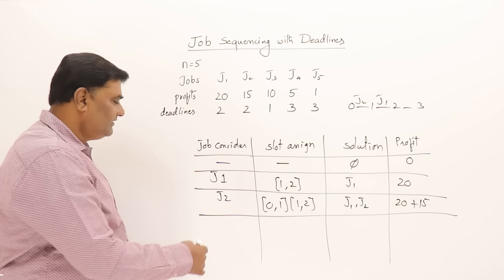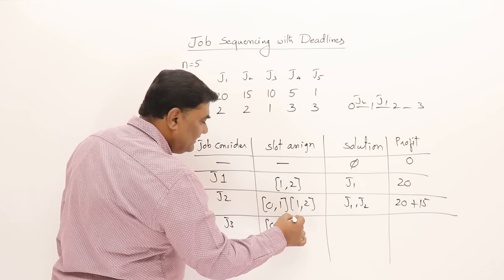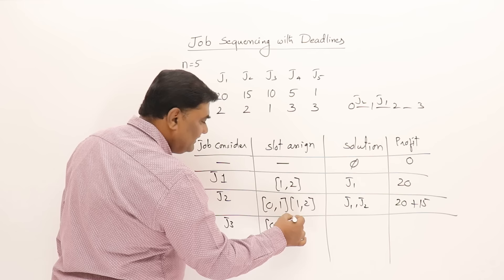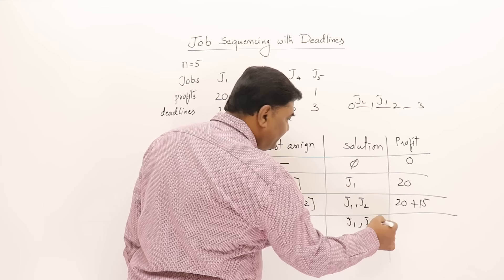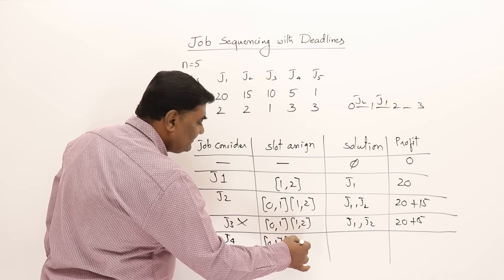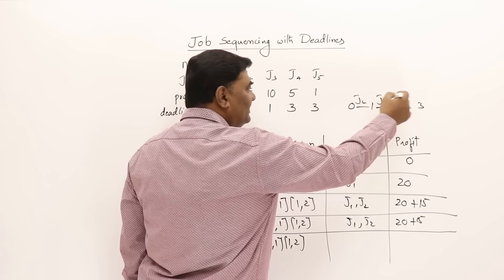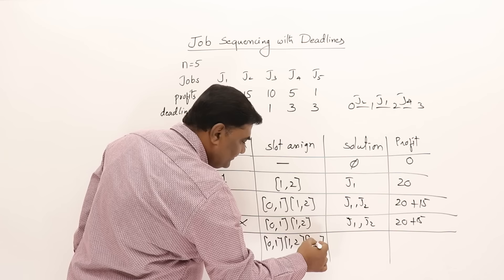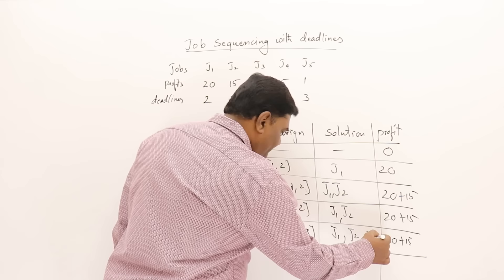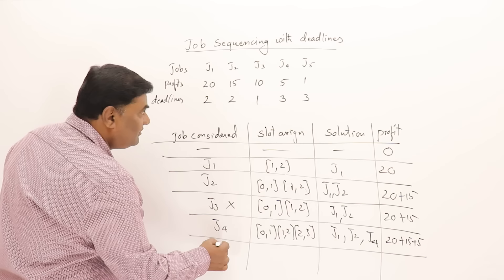J3 has deadline one — slot zero to one is already occupied, so no slot is assigned and J3 is not included. The solution remains J1 and J2 with profit 35. J4 has deadline three — slots zero to one and one to two are taken, so it goes into slot two to three. Solution is J1, J2, J4 with total profit 40. J5 cannot be selected, so the final profit is 40.